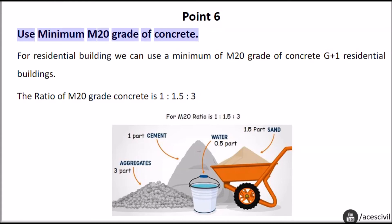Point six: use minimum m20 grade of concrete for residential building. We can use a minimum of m20 grade of concrete. G plus one residential buildings the ratio of m20 grade concrete is one, one point five, three.